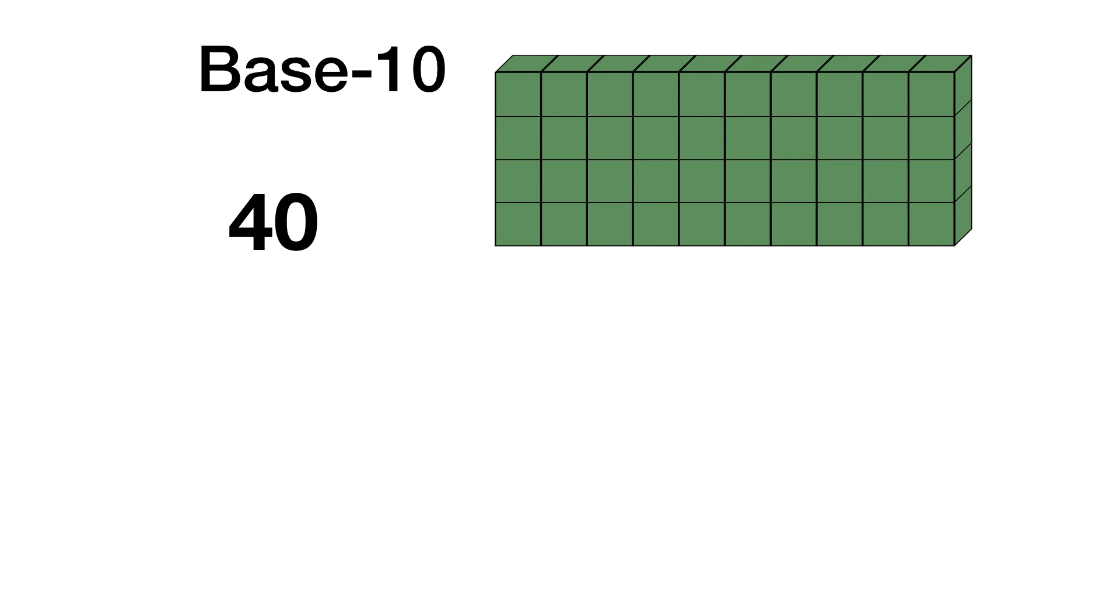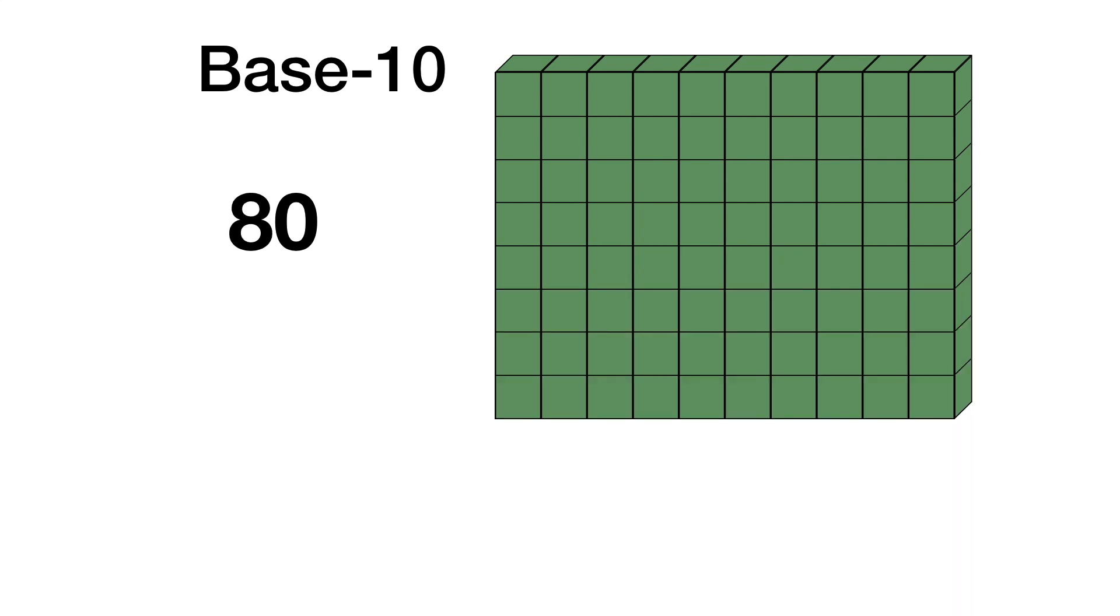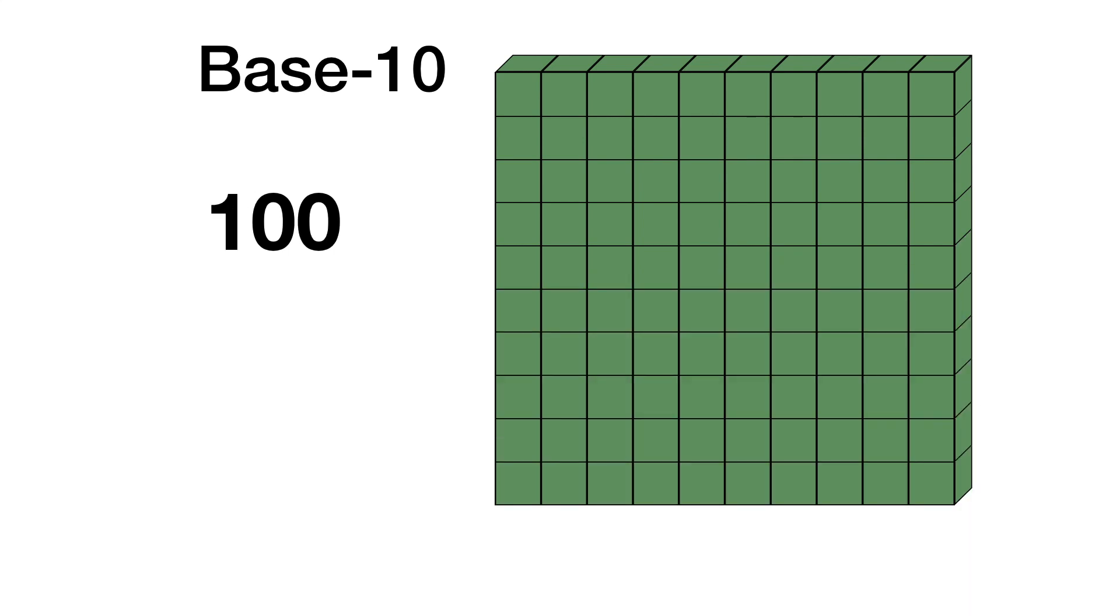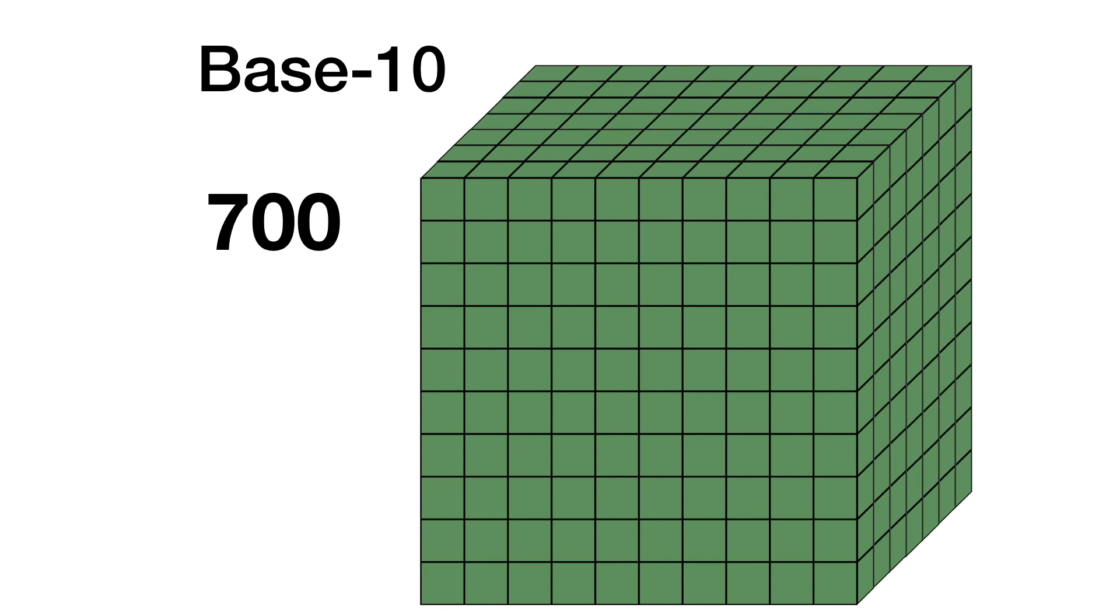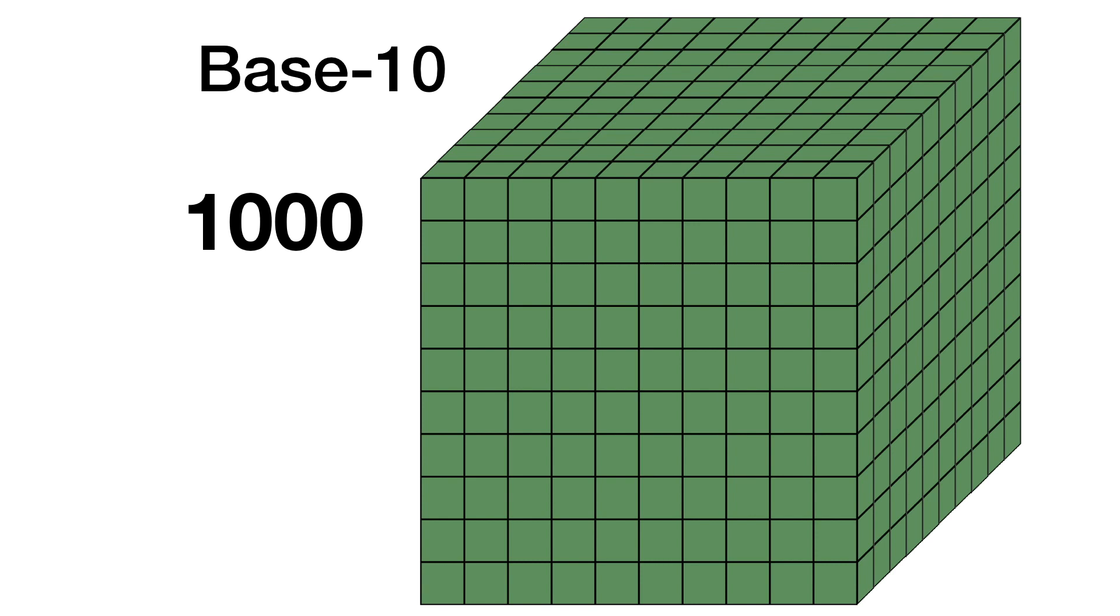The number system that we usually use is called base 10. We count the numbers 1 through 9, we run out of digits, so we move to the next column where we can count by 10s up through 90. Again, we have to move out another column because we've run out of digits. Now we're up in the hundreds. This is the number system that we know and love.